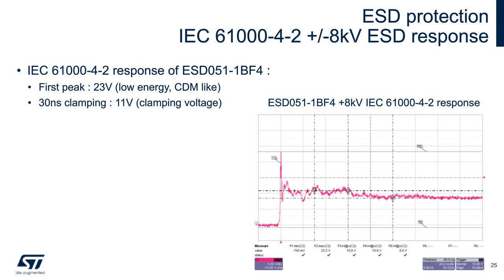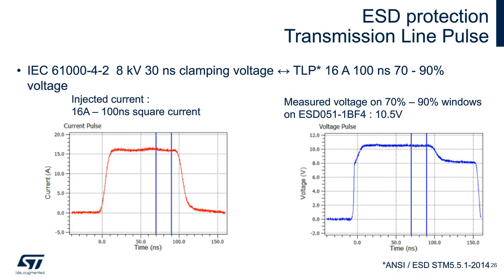To perform ESD analysis, transmission line pulse (TLP) is used. A square current pulse of 100 ns is injected into the protection. The remaining voltage is then measured between 70% and 90% of the incident pulse duration. For the ESD 051-1BF4, with a 16-amp incident current, the TLP voltage is 10.5 volts — comparable to the clamping voltage measured with 8 kV IEC 61000-4-2.